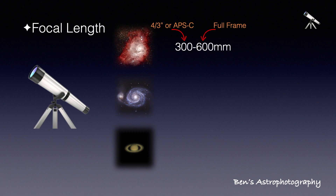Most nebulae are more than half a degree in size and usually sprawl out into space. So a focal length of 300 to 600 millimeters is pretty much ideal. If you have a full-frame camera, you should go more towards 600mm. And if you have a Four Thirds or APS-C format camera, 300 to 400mm focal length will fit better. Of course, 300mm with a full-frame camera can still get you some great shots, but the targets are pretty limited.